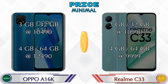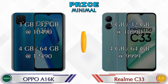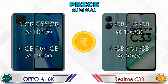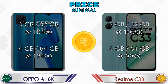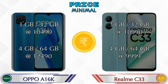Both phones have two variants. The A16k comes in 3GB RAM with 32GB storage at 10,490 rupees and 4GB RAM with 64GB storage at 12,490 rupees. The Realme C33 comes in 3GB RAM with 32GB storage at 10,990 rupees and 4GB RAM with 64GB storage at 9,999 rupees.